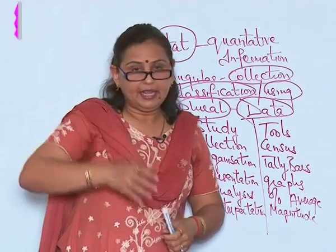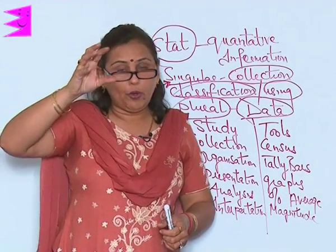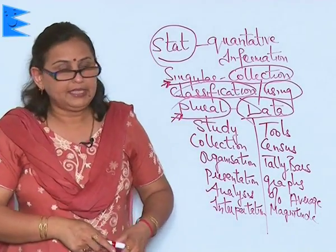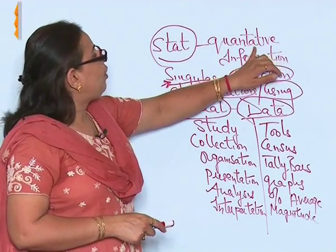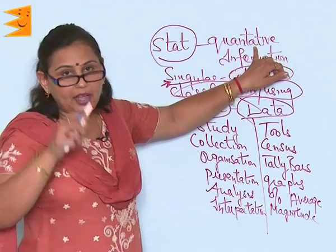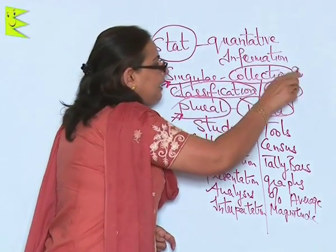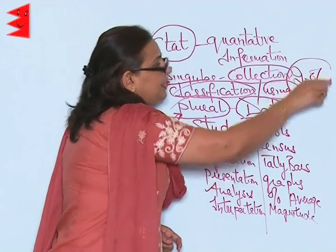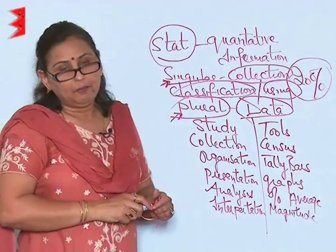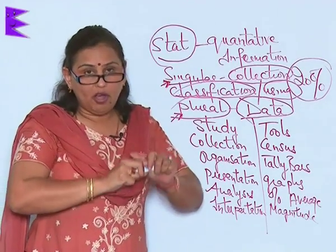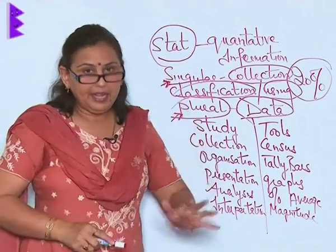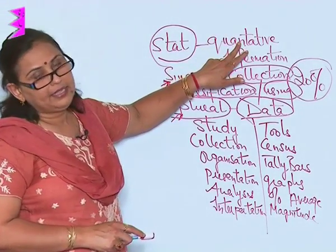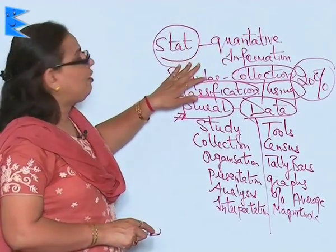The most important thing is that in statistics we talk in terms of quantity. For example, I say 20% of the Indians are unemployed. I am using the quantity 20%, that is in numbers, in figures. When I am talking of economics in the approach of quantity and number, that is the time we talk of statistics.